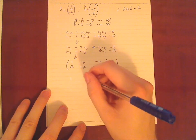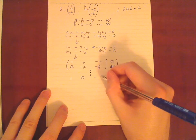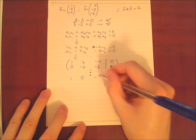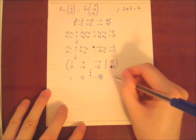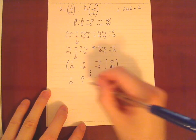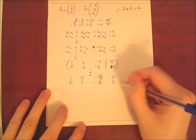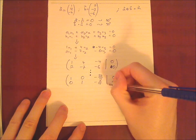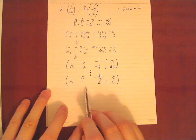So it will be 1, 0, minus 52 divided by 15, 0. 0, 1, minus 2 divided by 15, 0. And why does it look like that? It looks like that because we have one information less than we have variables.